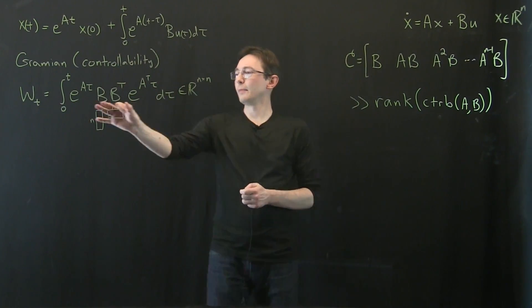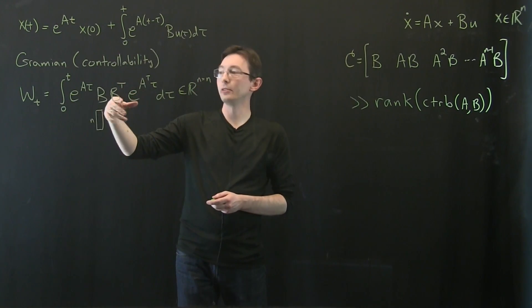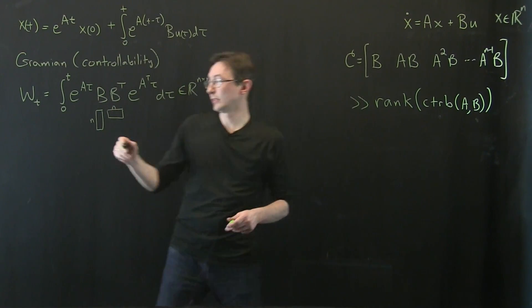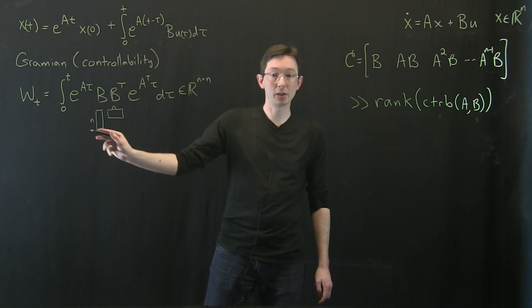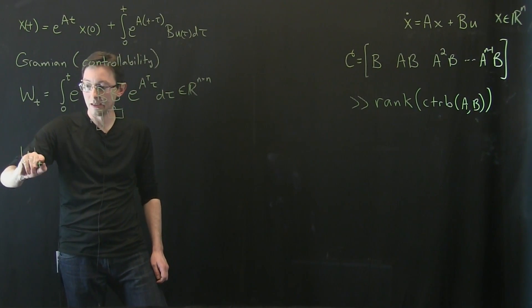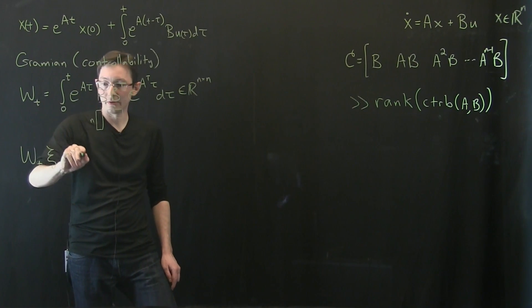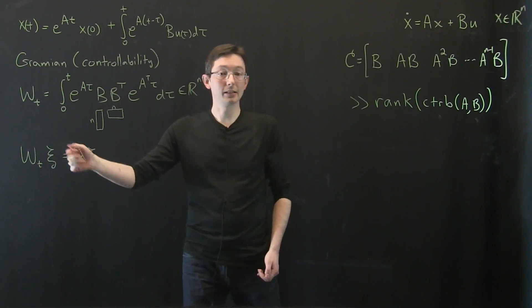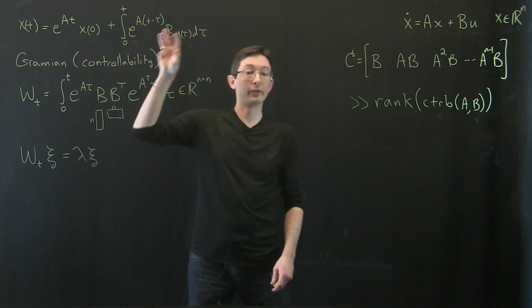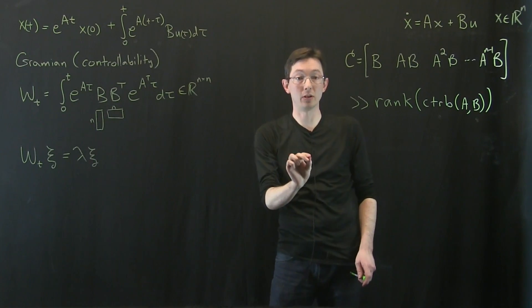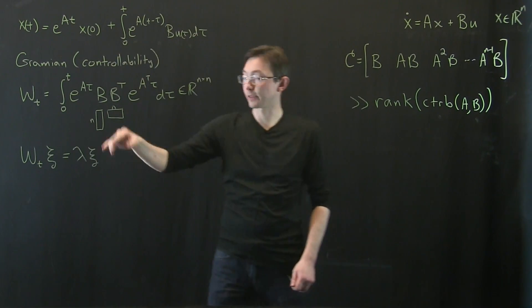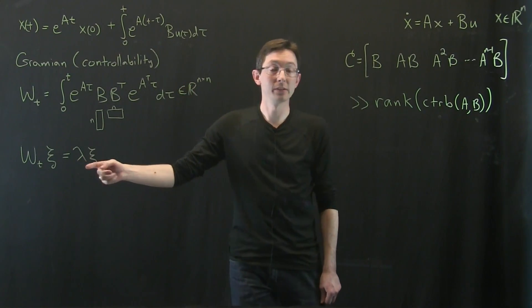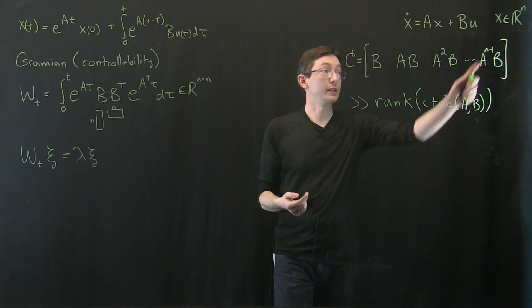And because it's in this case real valued and symmetric, we know that it's going to have positive real eigenvalues. And so I look at the eigendecomposition of this object, if I look at Wt C equals lambda C, then essentially I can order these eigenvalues of this Gramian from biggest eigenvalue down to smallest eigenvalue. They're all non-negative, so there's a biggest one down to a smallest one.